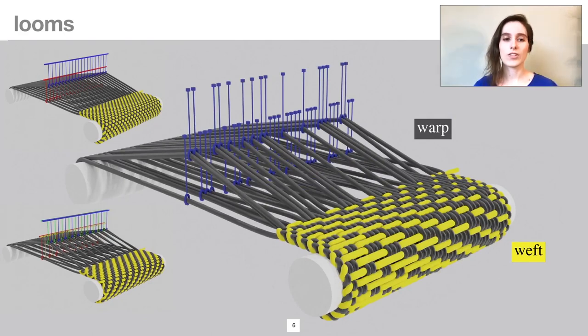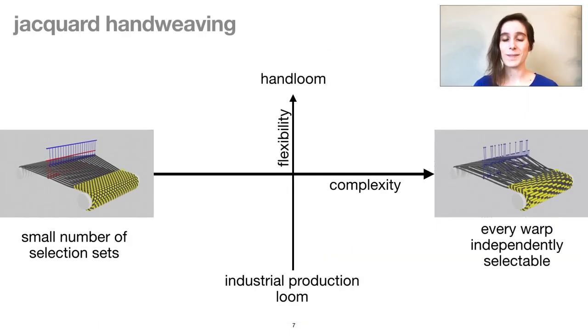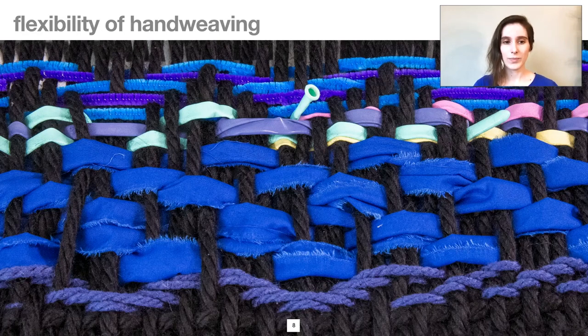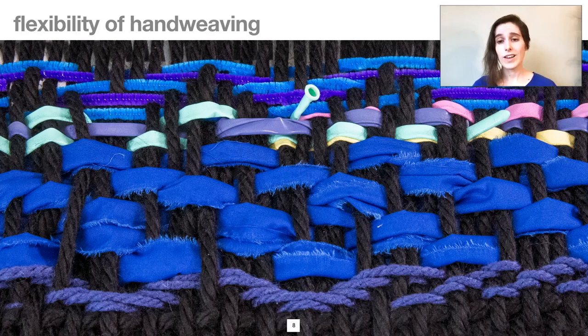It's important to note that a Jacquard mechanism does not have to mean that the whole weaving process is automated. Factory looms are typically highly automated, and they're also typically expensive, large, and highly optimized for a specific kind of fabric. In contrast with a hand loom, the weaver can incorporate materials which may be difficult to automate for, and they can even make patterning decisions throughout the process.